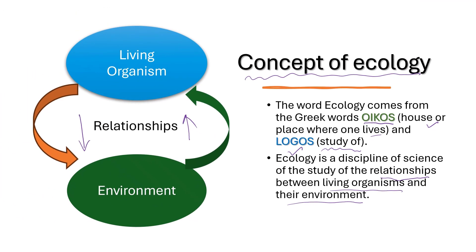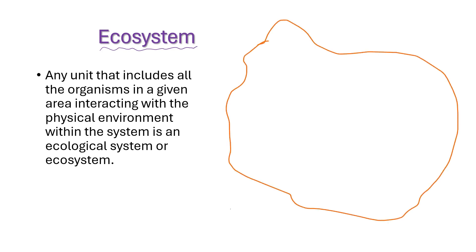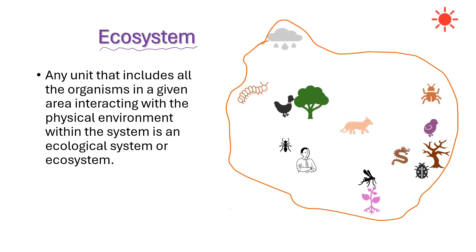Ecology explores the intricate connections between plants, animals, and their physical surroundings, including soil, water, and climate. Living organisms and their non-living environment are inseparably interrelated and interacting with each other. Any unit that includes all the organisms in a given area interacting with the physical environment is an ecological system, or ecosystem.